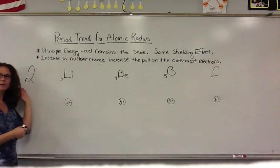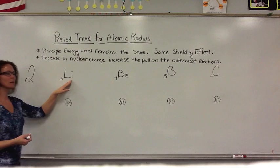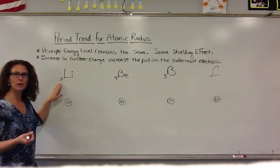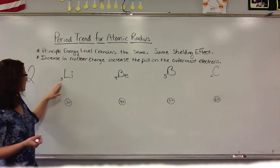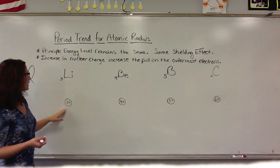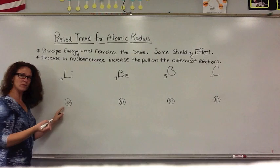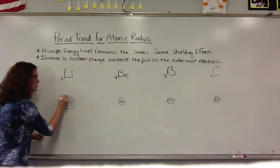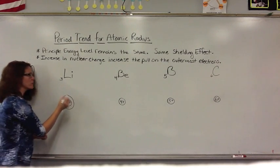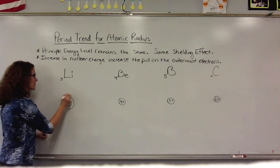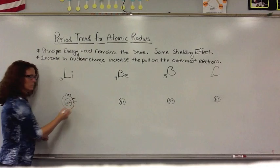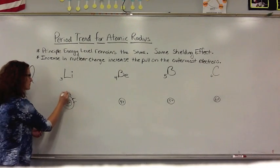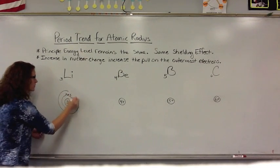Period 2 actually starts with Lithium, atomic number 3. Lithium has three protons. So the first two electrons are on the first energy level and that third electron is on N equals 2.